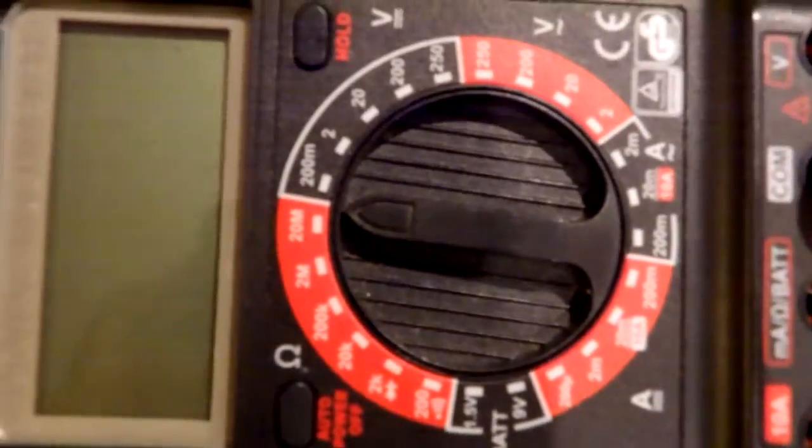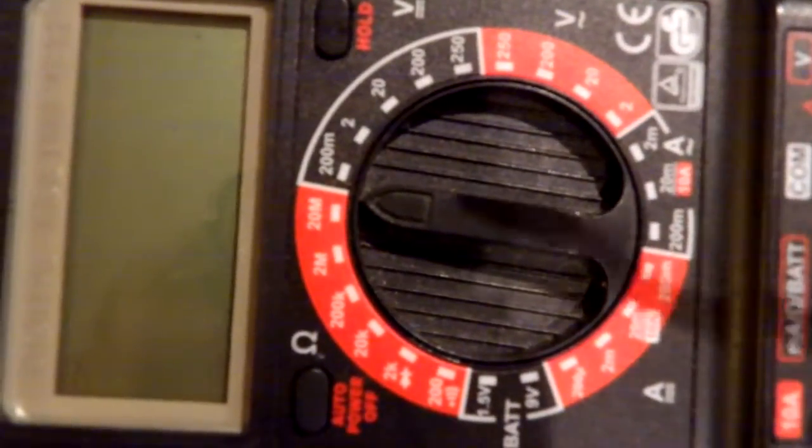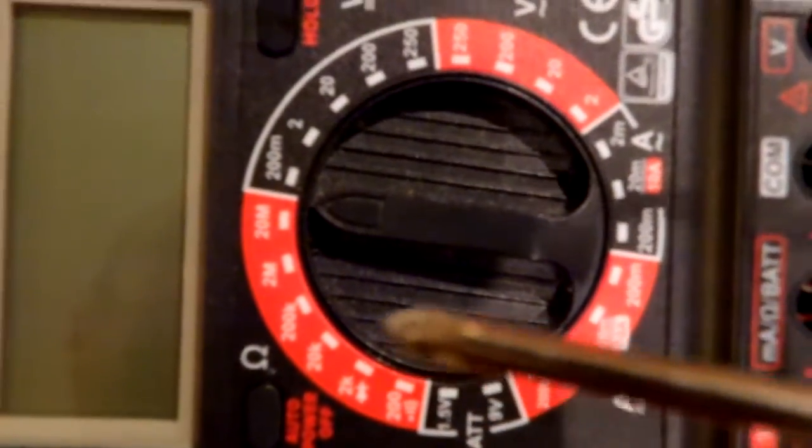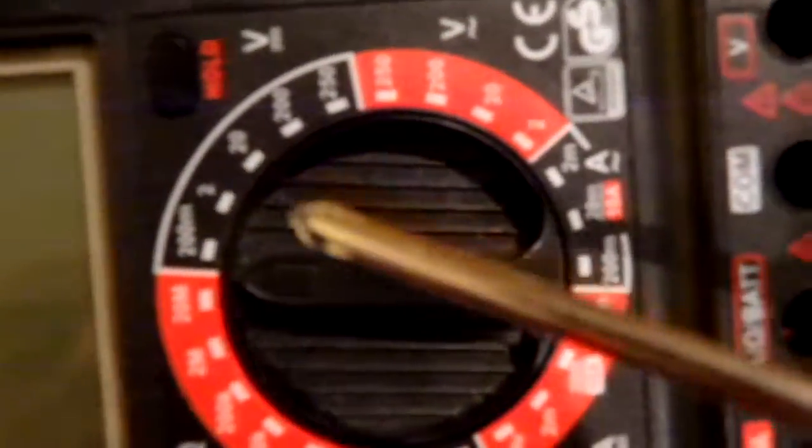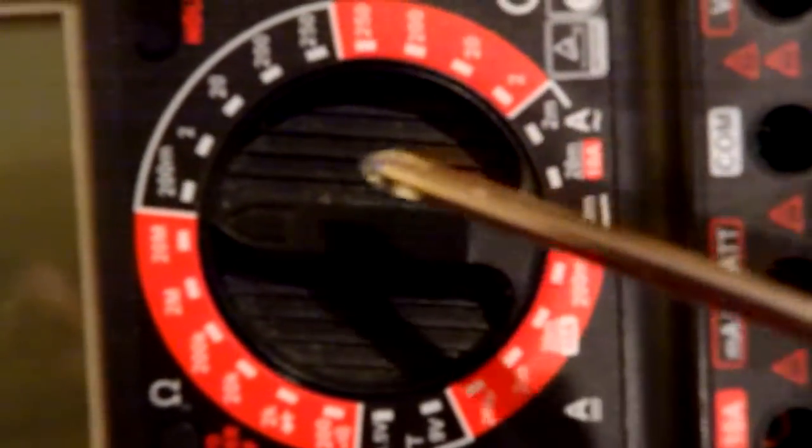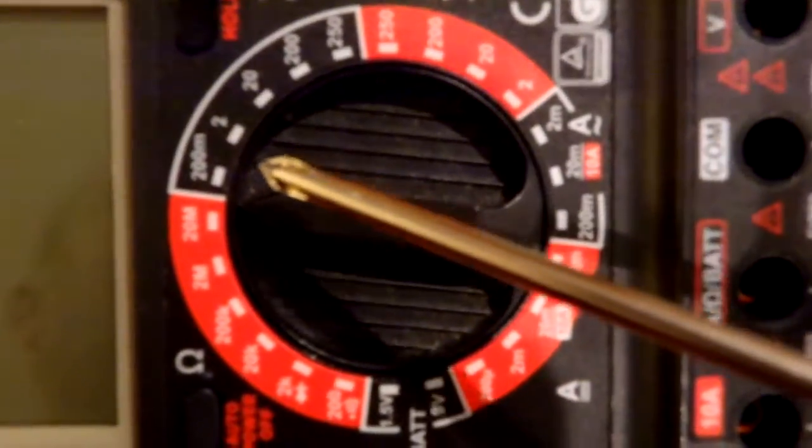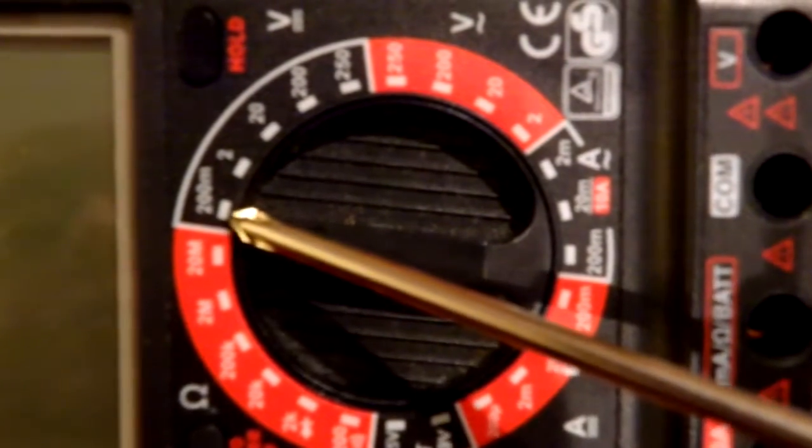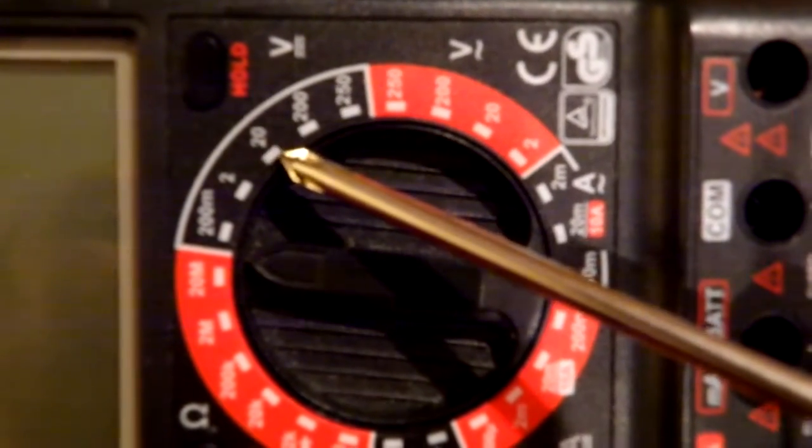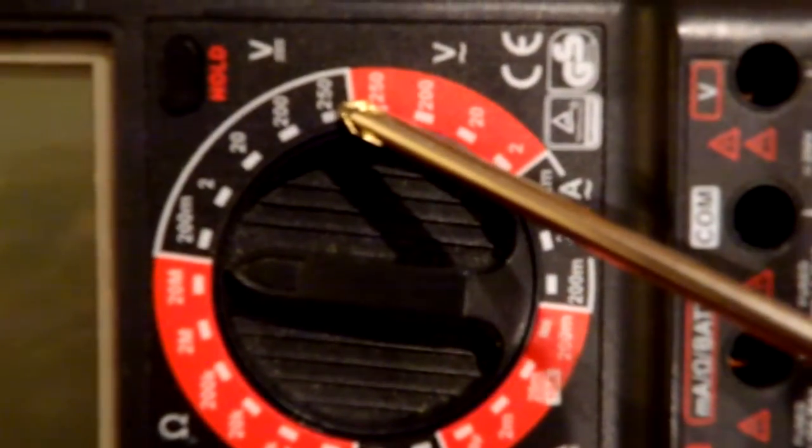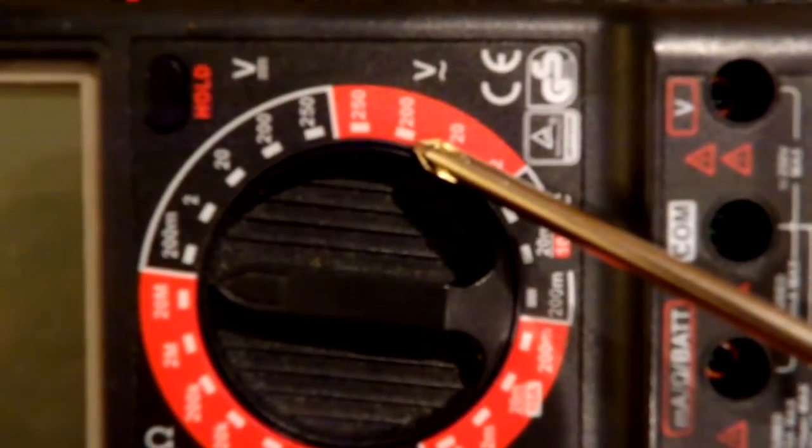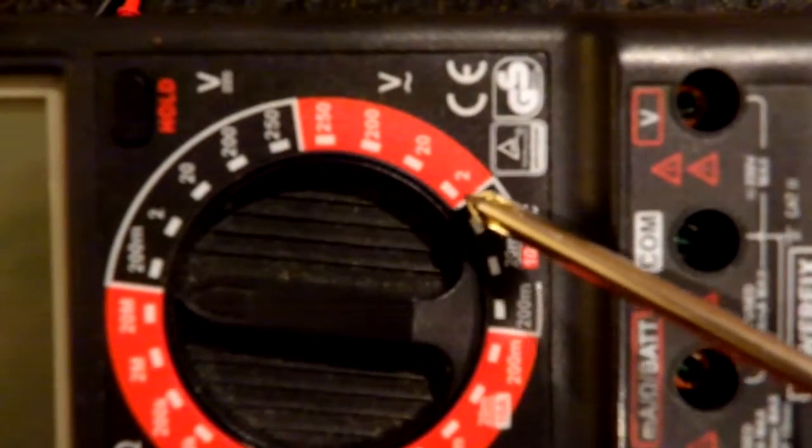Now what you can see is you have your voltage DC, and that goes from 200 millivolts, 2 volts, 20 volts, 200 volts, 250 volts. Then you're into your AC, 250 volts AC, 200 volts, 20 volts, 2 volts.